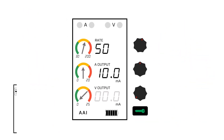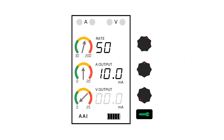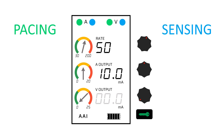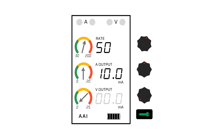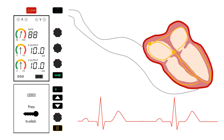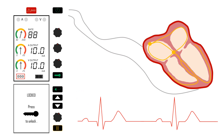We can see if the pacemaker, or pulse generator, is sensing or pacing by looking at the lights at the top of the screen. Blue lights indicate sensing and green lights indicate pacing. The blue lights will flash when electrical activity in the heart is sensed, and the green lights will flash when the pacemaker generates a pulse to pace the heart. Here, the pacemaker is in DDD and the heart is in sinus rhythm with normal conduction. First, the pacemaker senses the intrinsic atrial activity through the atrial wire, and then it senses the intrinsic ventricular activity through the ventricular wire. We can see this sensing as the blue lights flashing on the pulse generator screen.